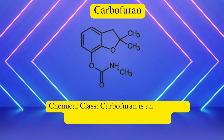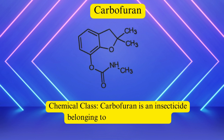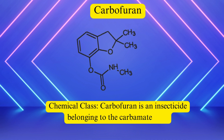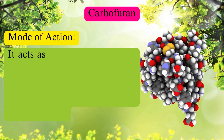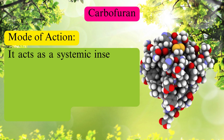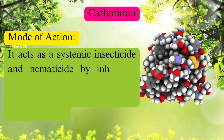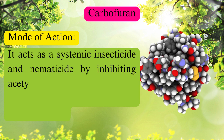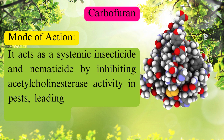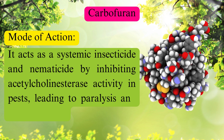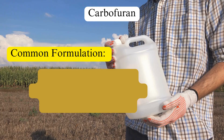Carbofuran class. Carbofuran is an insecticide belonging to the carbamate class. Mode of action: it acts as a systemic insecticide and nematicide by inhibiting acetylcholinesterase activity in pests, leading to paralysis and eventual death.